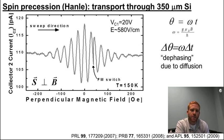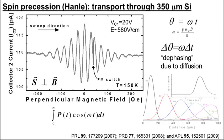We can model this measurement with a transport simulation, summing up the cosine-like contributions from electrons with a distribution of arrival times in order to fit the non-equilibrium spin mobility and diffusion coefficients we're after.